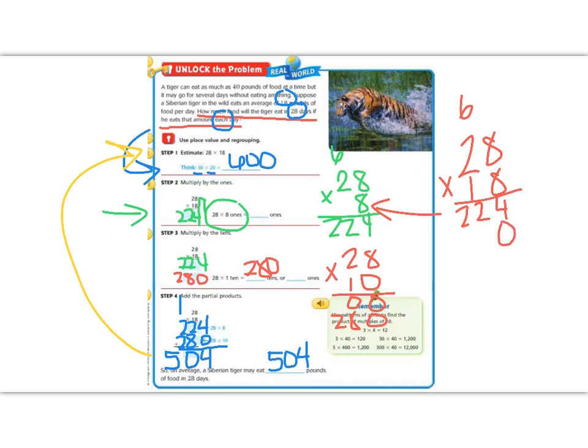1 times 8 is 8, 1 times 2 is 2. Look, there's our 280. Again, we got the same numbers, we just broke it apart into partial products. Then we add them together. 4 plus 0 is 4, 8 plus 2 is 10, carry the 1. 2 plus 2 is 4, plus 1 is 5. So we get the same number.